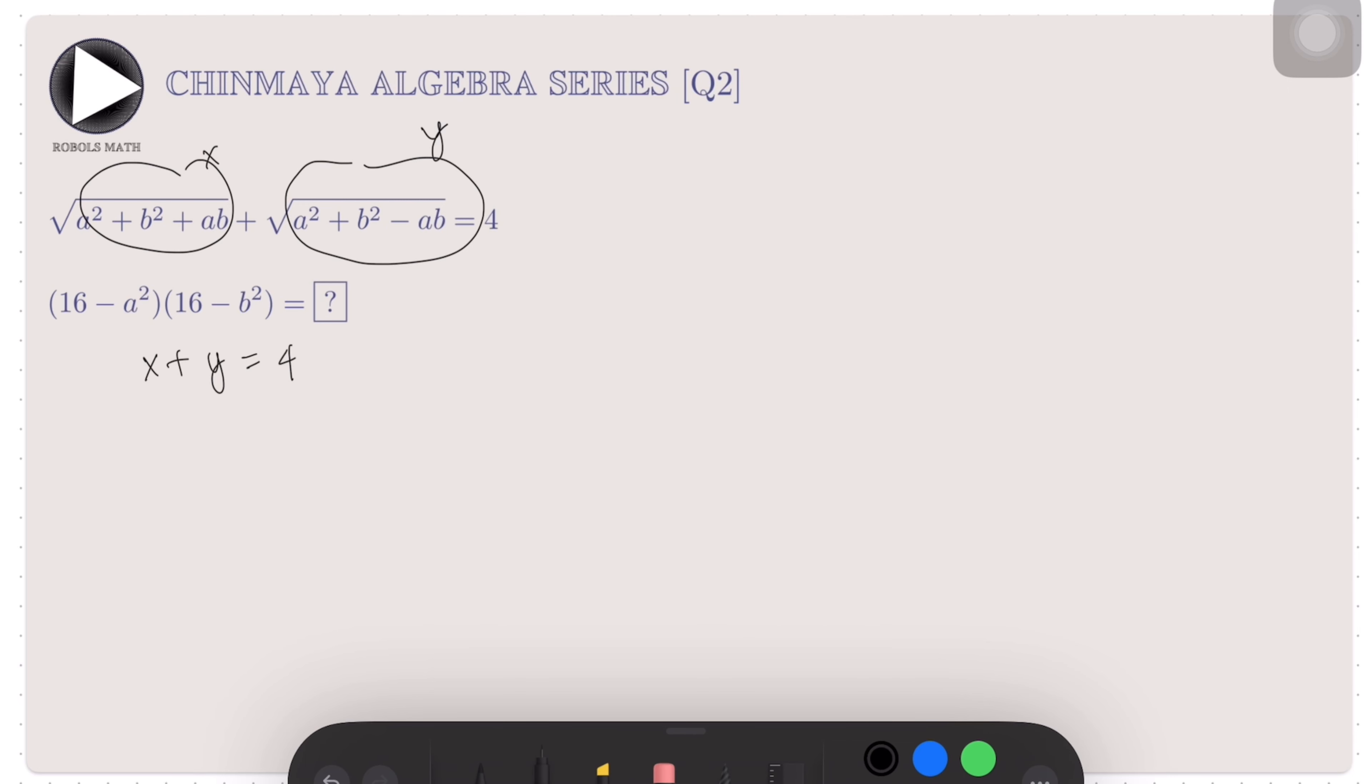Now here comes the trick. We multiply this by the conjugate of x + y, which is x - y. It's a conjugate because we are dealing with the conjugate of these two radicals here. And we equate this to 4 times (x - y). The left side becomes x² - y² using the formula for the difference of squares. While the right side becomes 4(x - y).